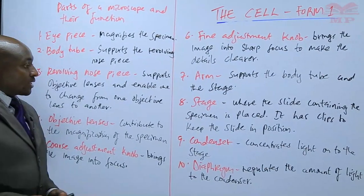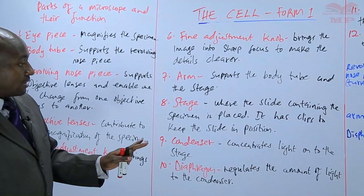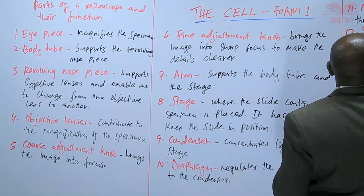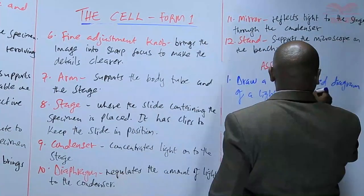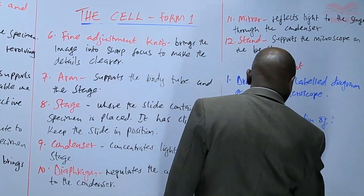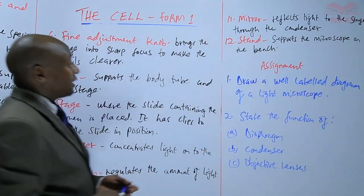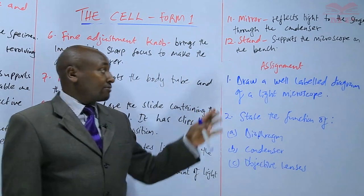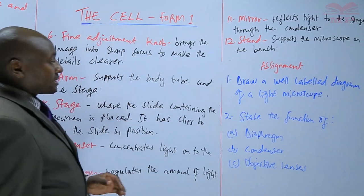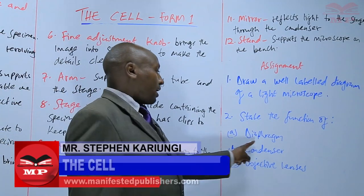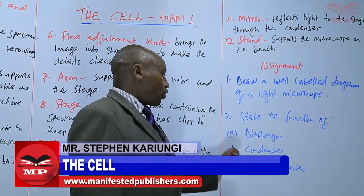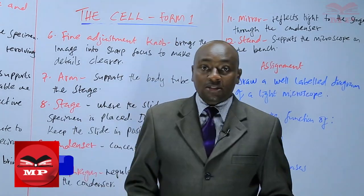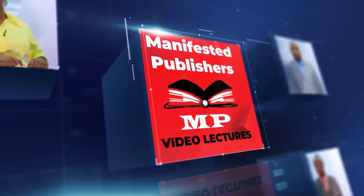So those are the parts of the microscope and the roles they play. The assignment for the day: Question one — draw a well-labeled diagram of a light microscope as we have done. Question two — state the function of: (a) the diaphragm, (b) the condenser, and (c) the objective lens. We'll stop there. See you next time, goodbye.